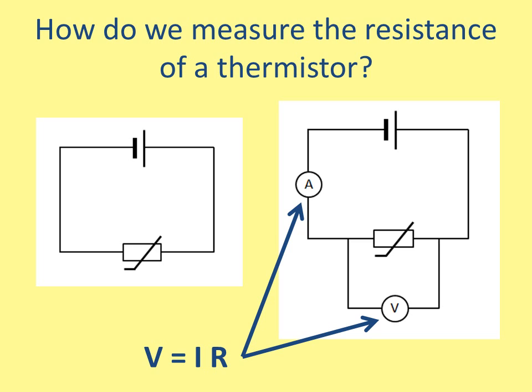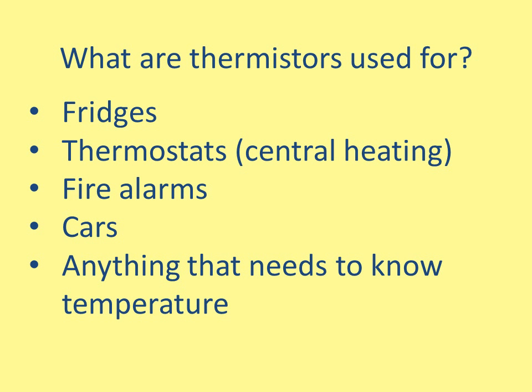This resistance is really important because then I can know the temperature of the surroundings just from the resistance of that thermistor. Thermistors are used in fridges, thermostats, fire alarms, cars, or anything that needs to know the temperature. Most electronic things such as a car can't read a thermometer, so they measure the resistance of a thermistor and compare that to known values to work out the temperature of the environment.